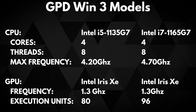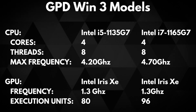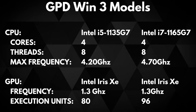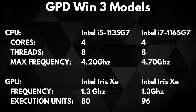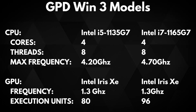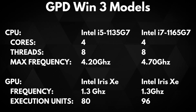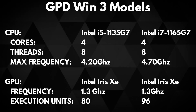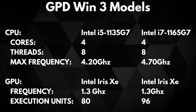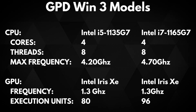Both models have the 12th generation Iris Xe graphics running up to 1.3GHz. The i5 has 80 execution units and the i7 has more with 96. Execution units perform the operations and calculations as instructed by the computer program, so the more the better.